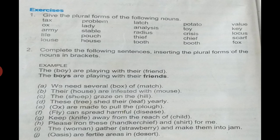Their houses are infested with mice, M-I-C-E. The sheep graze on the hills. Those trees shed their leaves, V-E-S. Oxen are made to pull the plows, simple S. Flies, Y replaces with I-E-S, can spread harmful diseases. Keep knives, F-E becomes V-E-S.